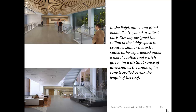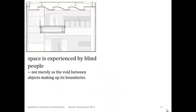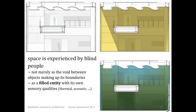If you combine the insights gained by approaching the phenomenon of your study — blind people's spatial experience — from different angles, it becomes clear that blind people experience space not merely as a void between the objects that make up its boundaries, but as a filled entity with its own sensory qualities, such as thermal qualities, acoustic qualities, etc. This concept of space as a filled entity with its own sensory qualities is an example of the kind of understanding qualitative research can yield in architecture.